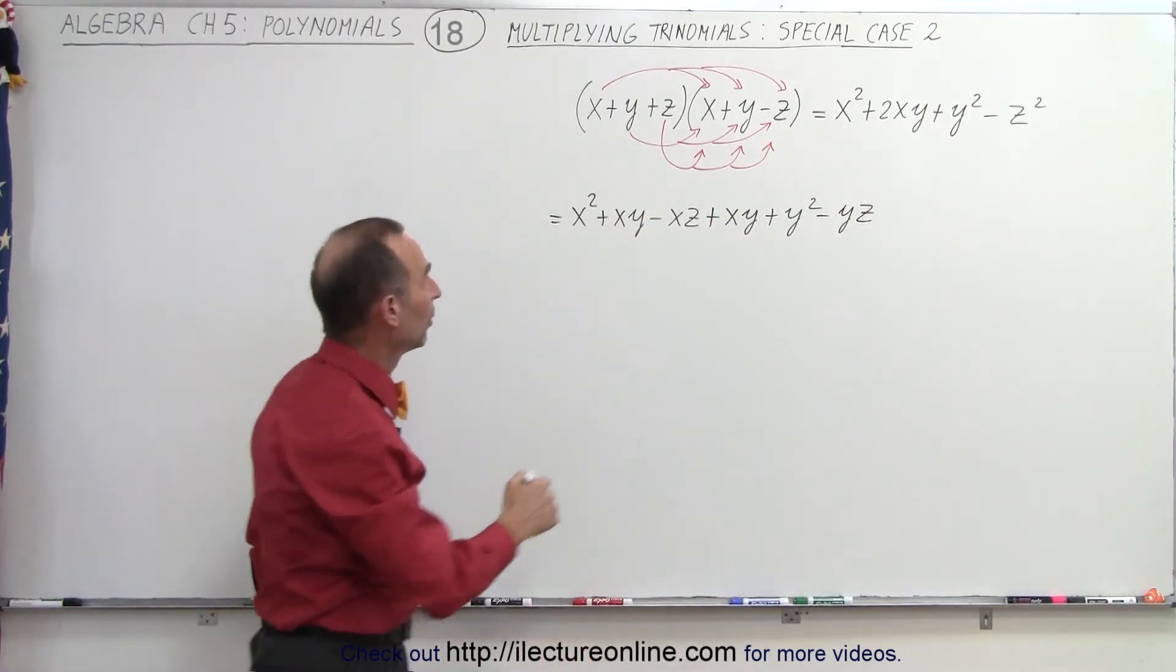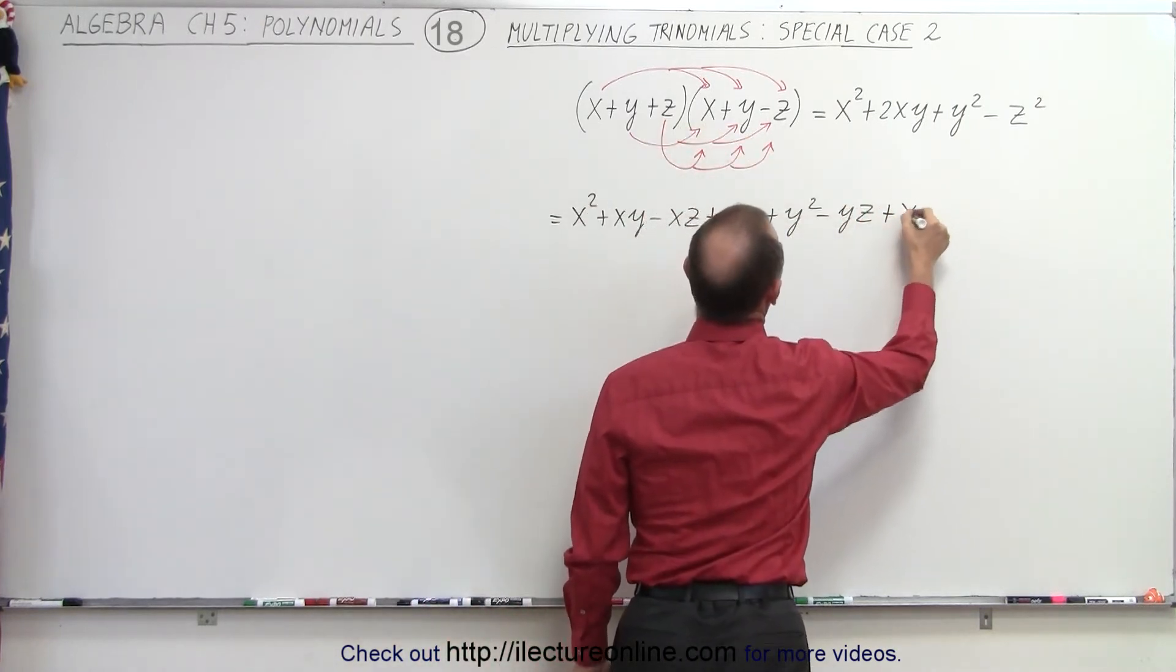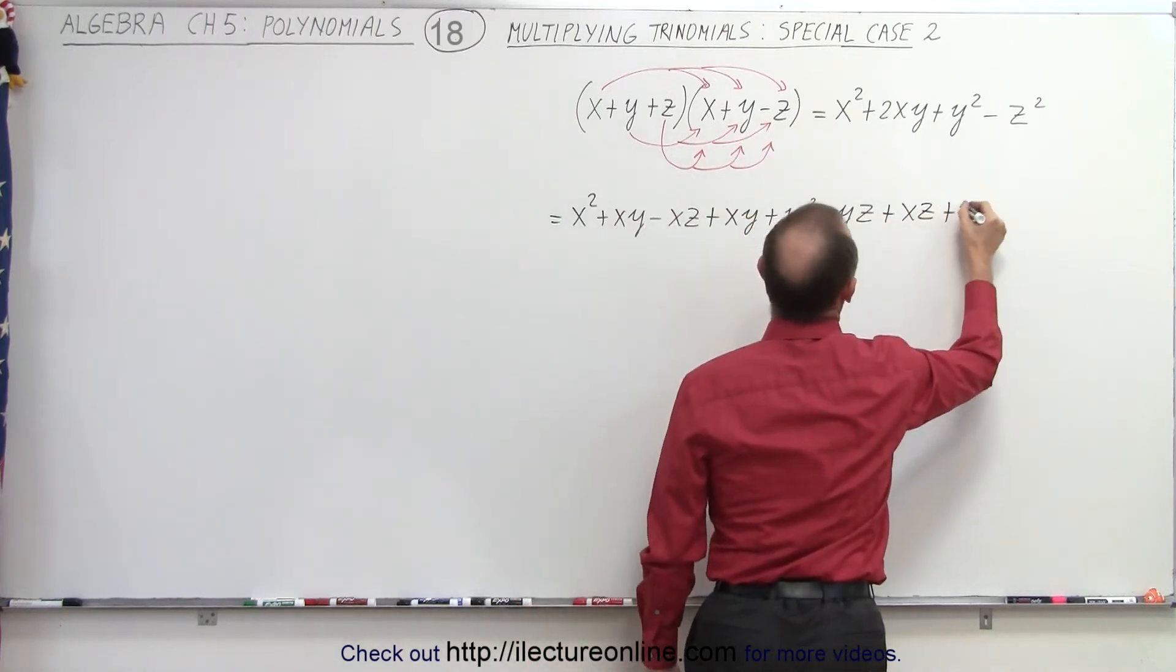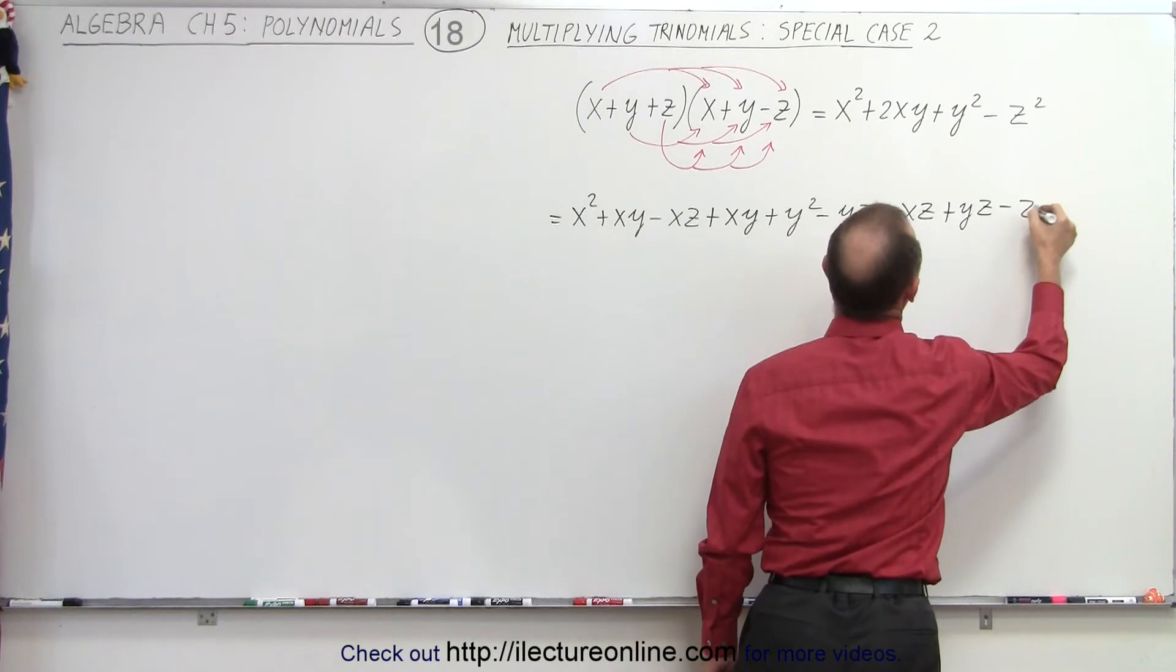Now we have the six terms, three more terms. We take the third term in the first polynomial. We get plus xz. Z times y would be plus yz, and z times a negative z is a minus z squared.